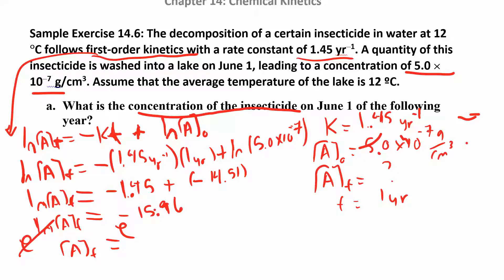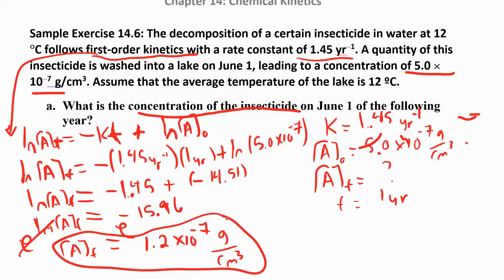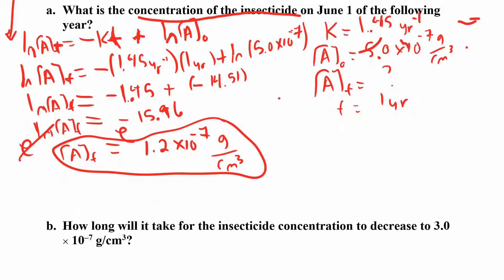To undo a natural log, use the e button — e raised to ln[A] just gives you [A]. So take e to the power of -15.96, which gives 1.2 × 10⁻⁷ g/cm³. That's your concentration with units. If you're having trouble finding the e button, it's usually the second function of the ln button (second + ln). It's not the EE button used for scientific notation — it's a different button. Email me if you need help.